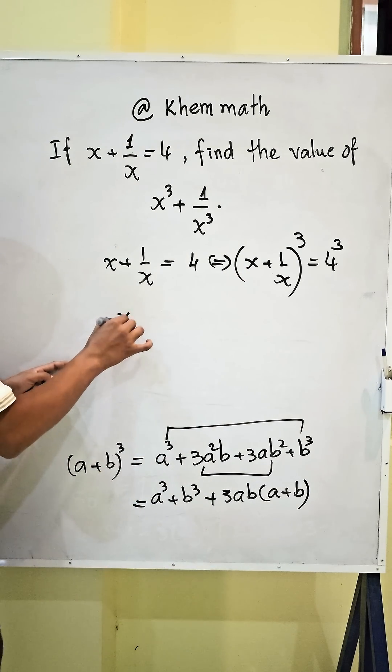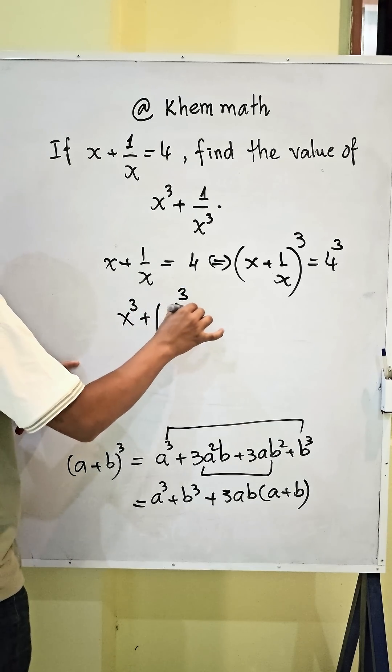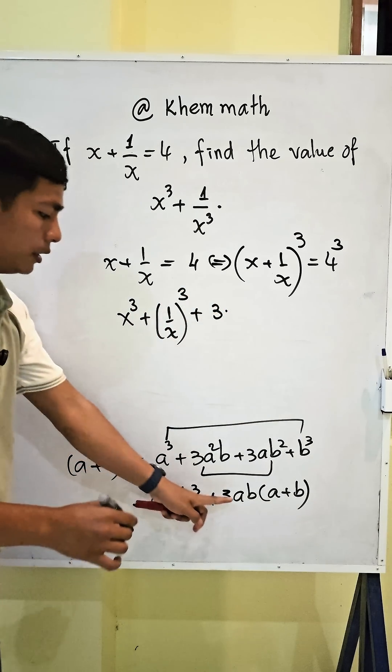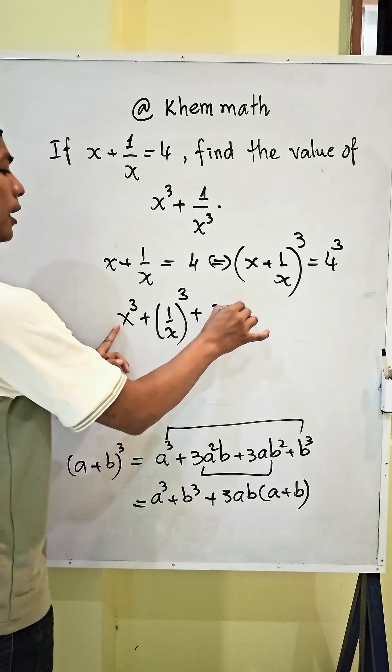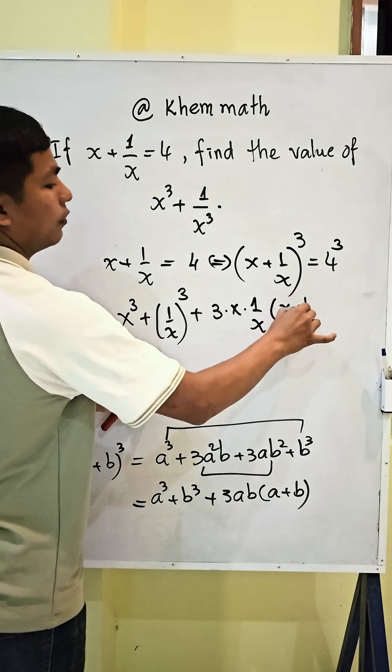We get this x power 3 plus 1 divided by x, all power 3, plus 3 times a b. You get it x and times 1 divided by x and times x plus 1 divided by x.